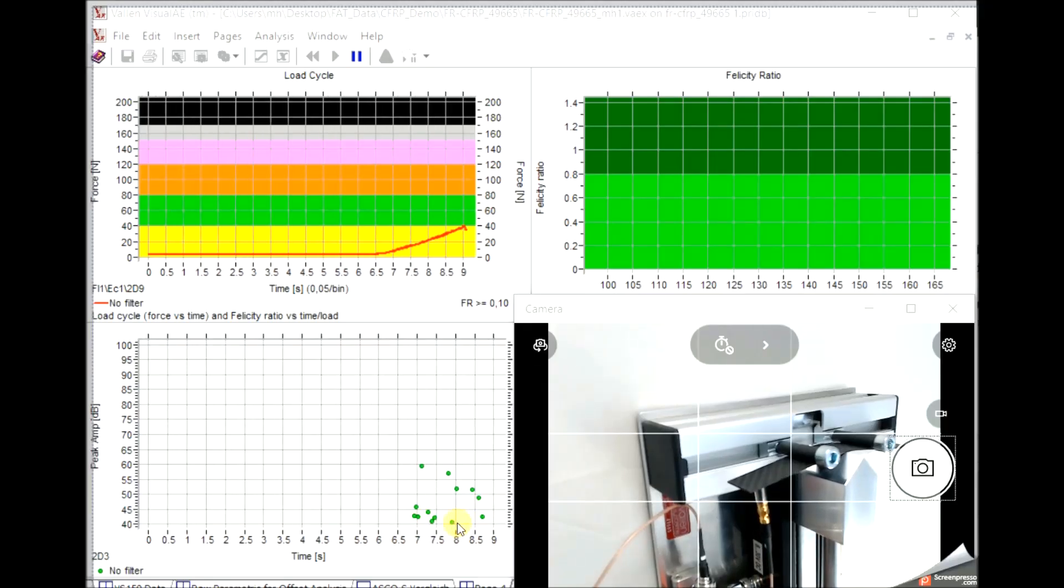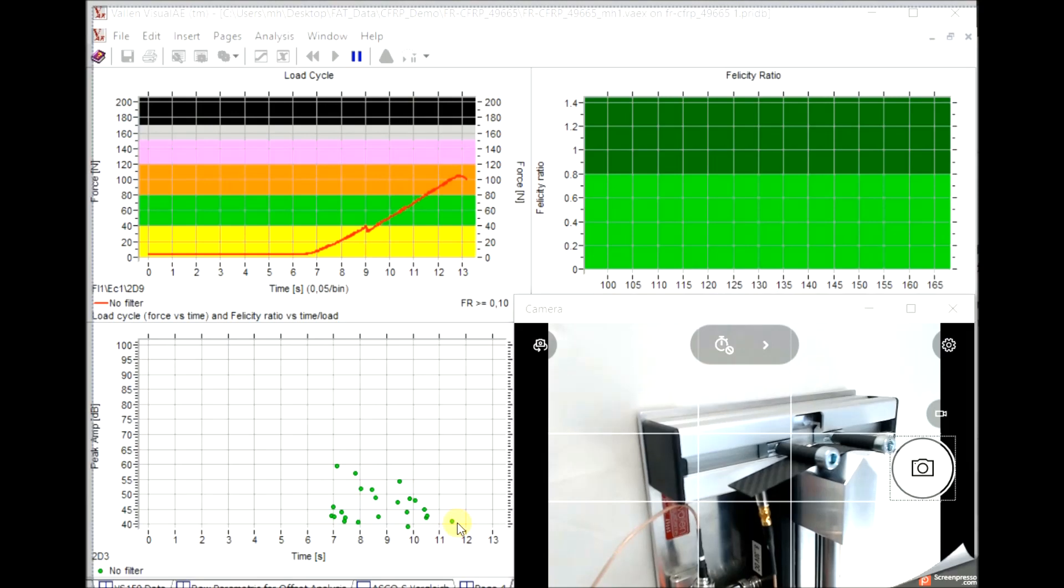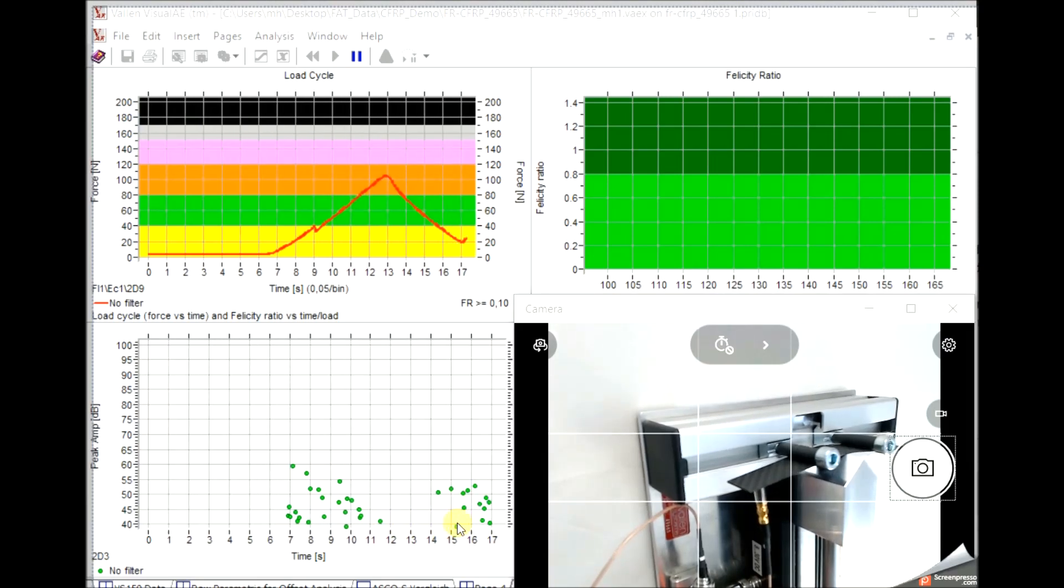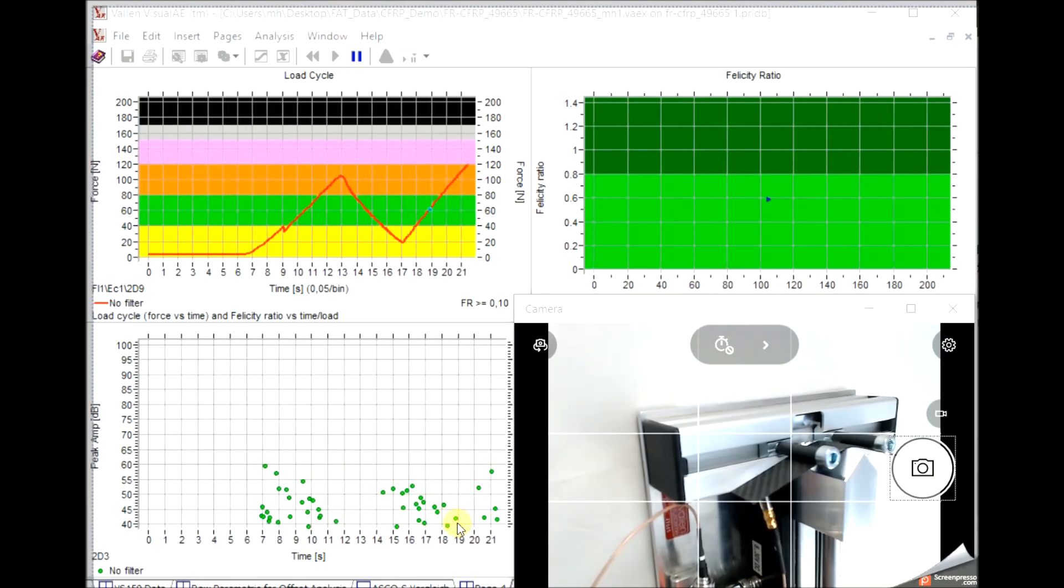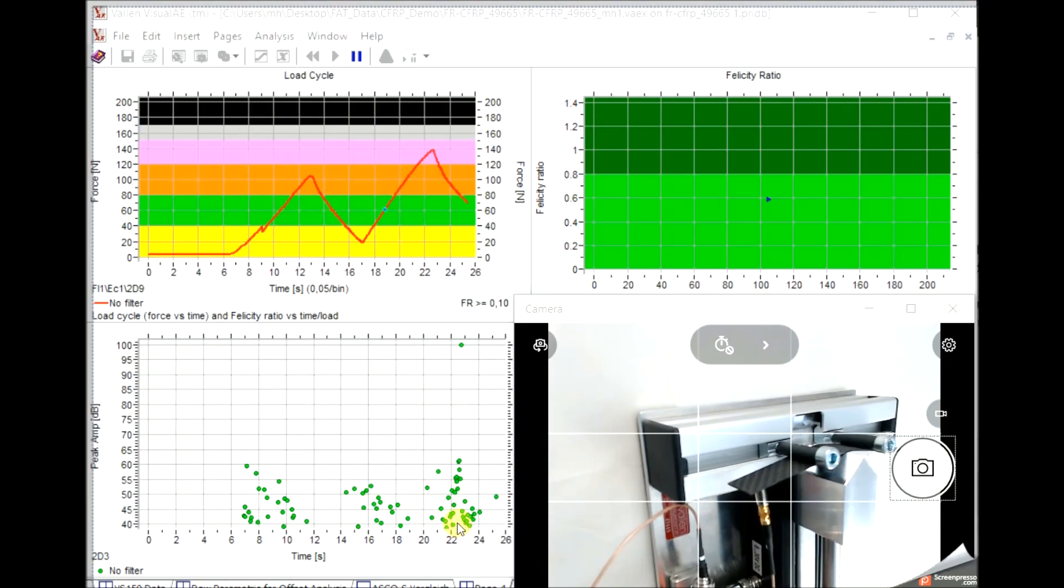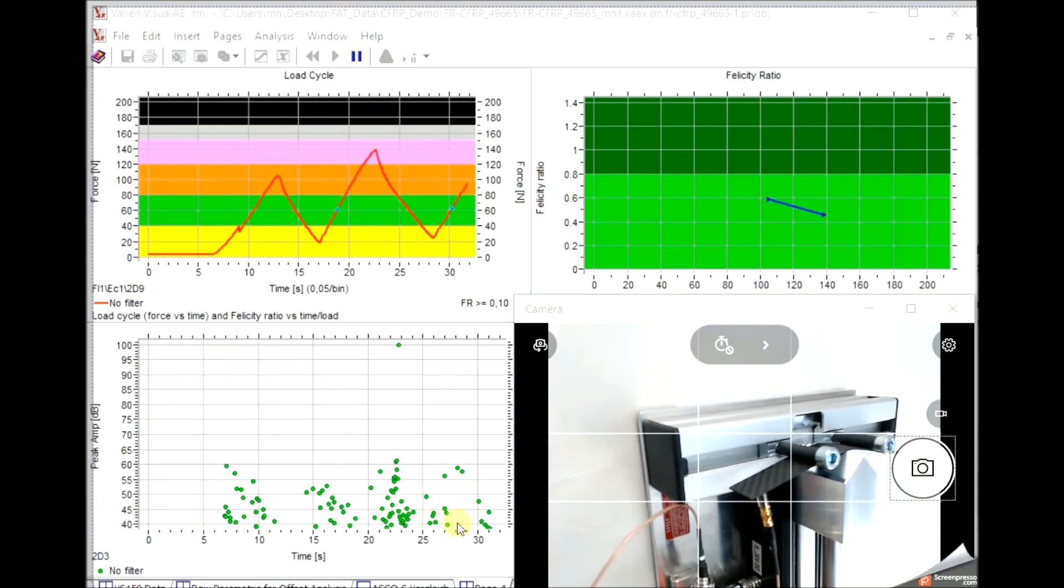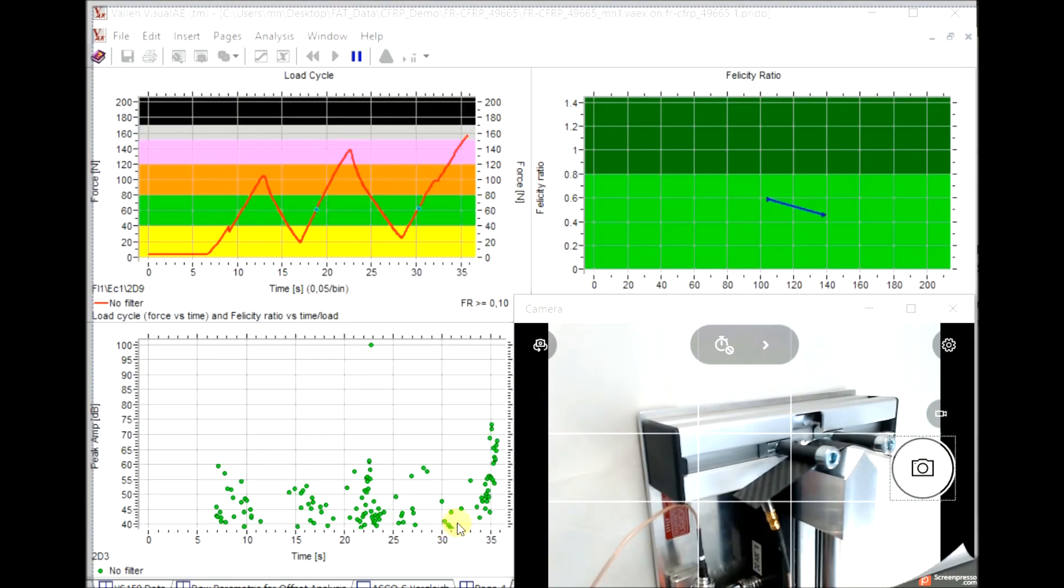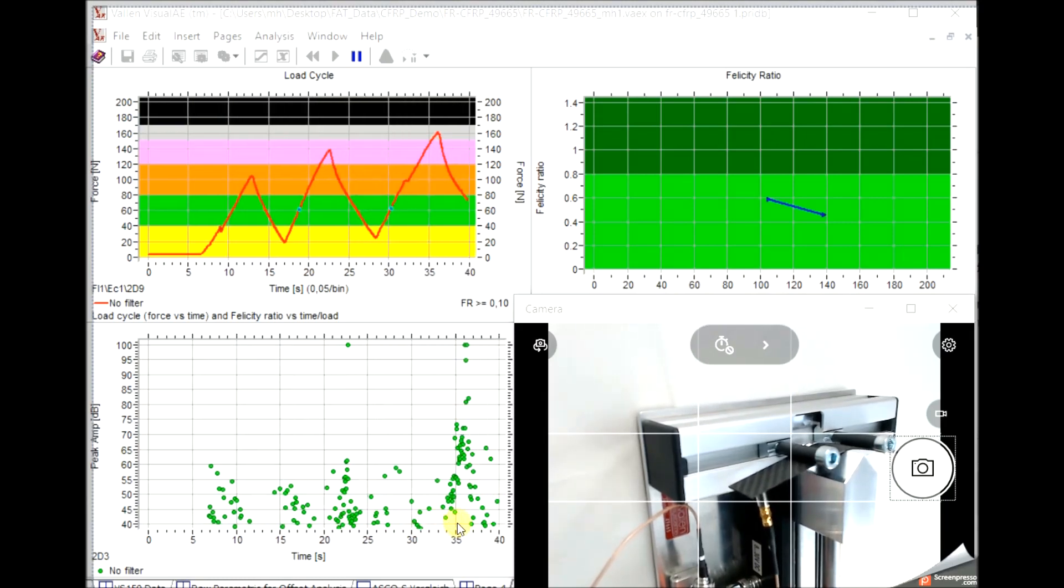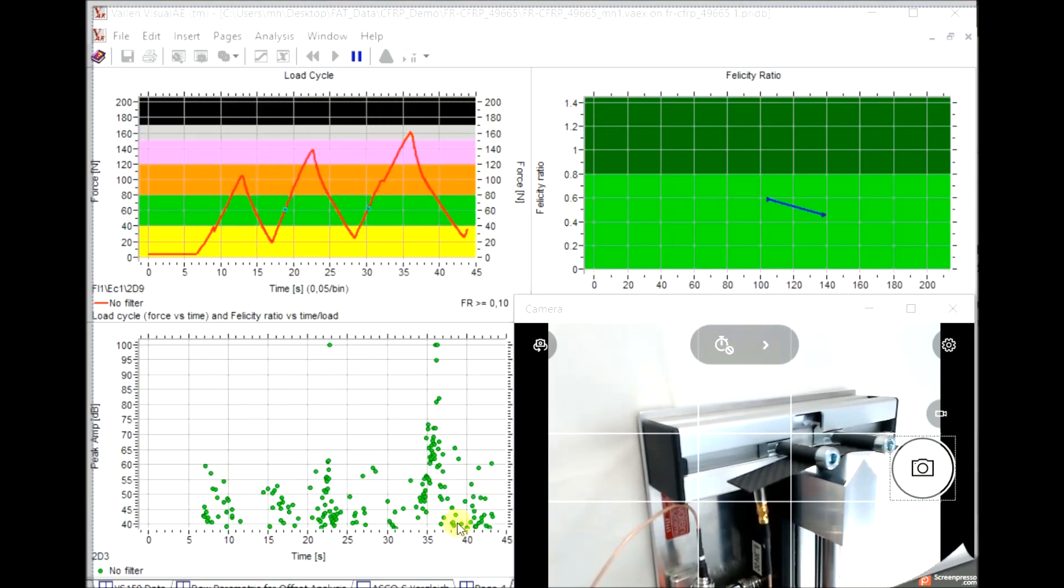The second result shows a damaged sample. The measured Felicity Ratio is below 0.8.